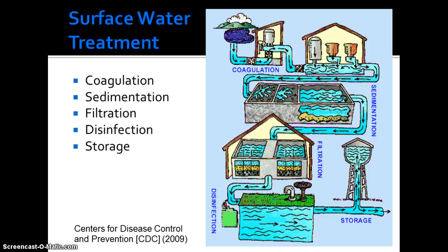As the Centers for Disease Control and Prevention, CDC 2012, notes, drinking water supplies in the United States are among the safest in the world. Some typical steps in treating surface water to U.S. drinking water standards include coagulation, sedimentation, filtration, disinfection, and storage. You can see the flow of water through each of these steps and then distribution of the water to end users.